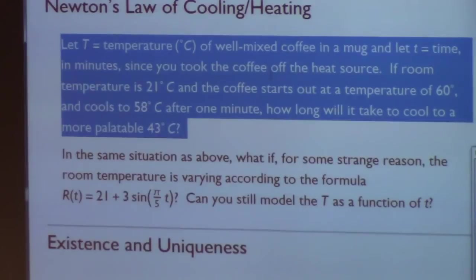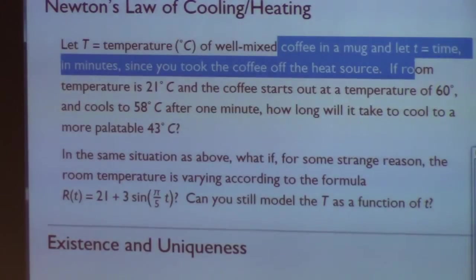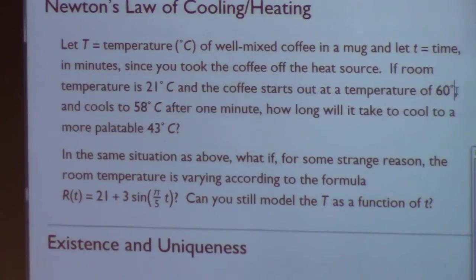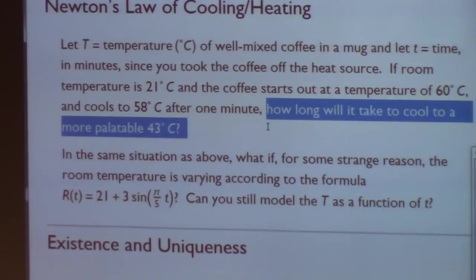A well-mixed coffee in a mug and little t is time in minutes since you took the coffee off the heat source. If the room temperature is 21 degrees Celsius and the coffee starts out at a very hot temperature of 60 degrees Celsius, and if you know, if you have a thermometer handy and it's cooled to 58 degrees after one minute, how long will it take to cool to a more palatable 43 degrees Celsius? And we're going to consider a more complicated situation as well.